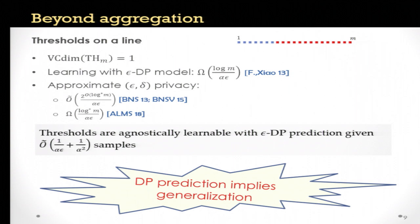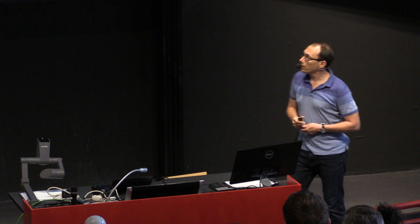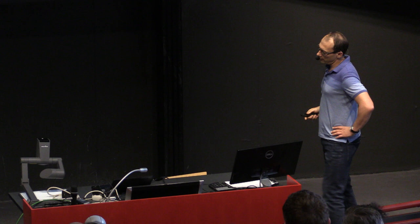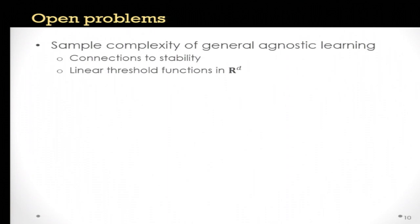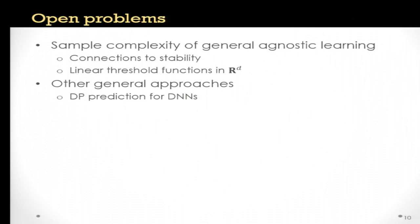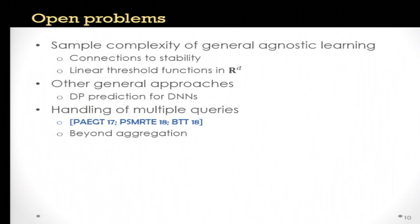There are quite a few still very interesting open problems. We still want to understand the sample complexity of general agnostic learning in this setting, which has nice connections to questions about uniform stability. We'd specifically like to understand the optimal sample complexity of learning linear threshold functions in d dimensions within this model. And of course, we need to handle multiple queries — there have already been works looking at multiple queries in aggregation, but we'd like to go beyond aggregation and do better.